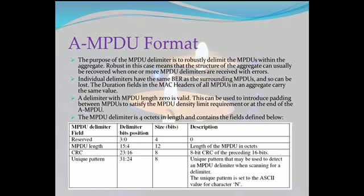A delimiter with MPDU length 0 is valid. This can be used to introduce padding between MPDUs to satisfy the MPDU density limit requirement or at the end of the AMPDU. The MPDU delimiter is 4 octets in length and contains the fields defined below.